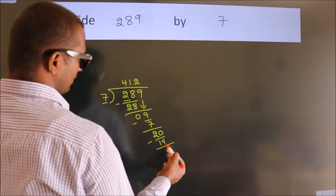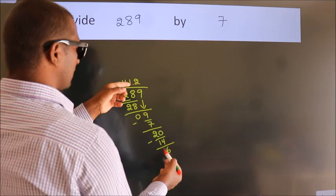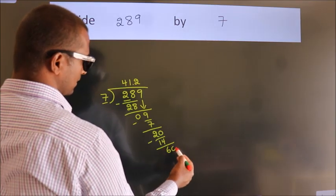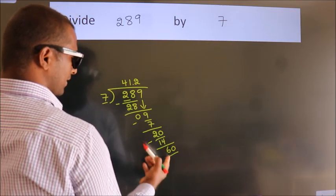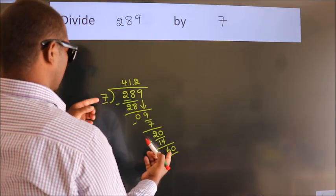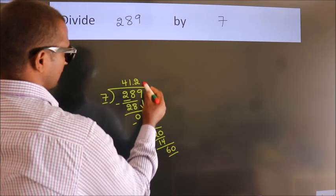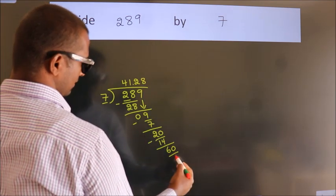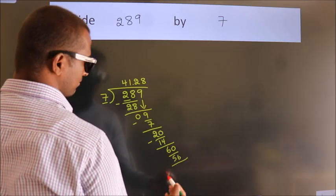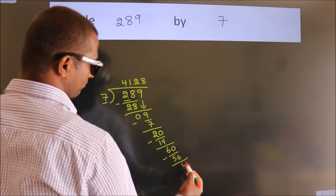After this, we already have the decimal, so directly take 0. So 60. A number close to 60 in the 7 table is 7 times 8 equals 56. Now we subtract. We get 4.